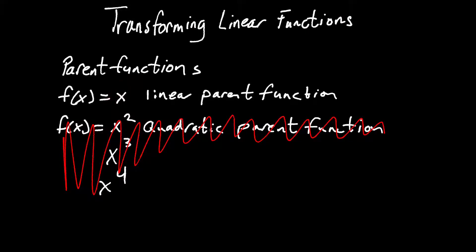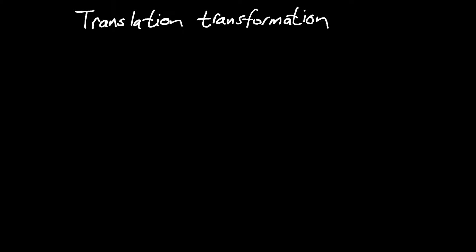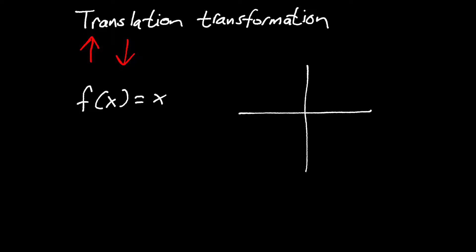Now that we have the idea of the parent function out of the way, let's start doing some transformations. The first type of transformation we're going to discuss is called a translation, or a translation transformation. All this means is that we are taking the parent function and we are shifting the graph up or down. Let's say we have the parent function f of x equals x. If I were to graph that, f of x equals x would look something like this.